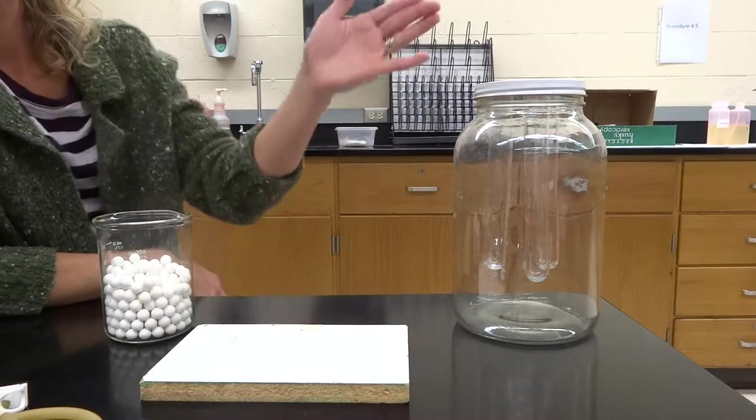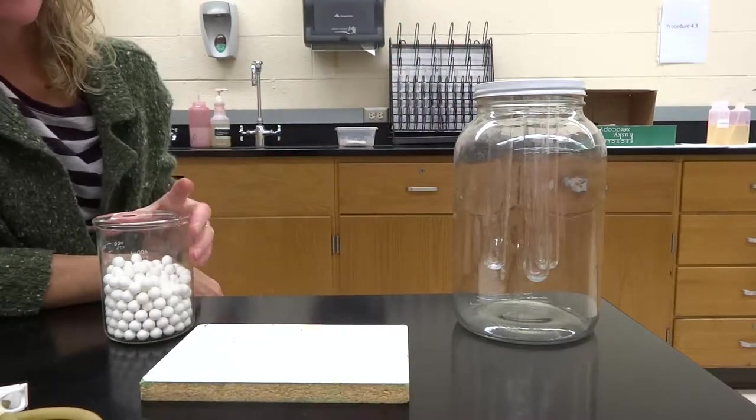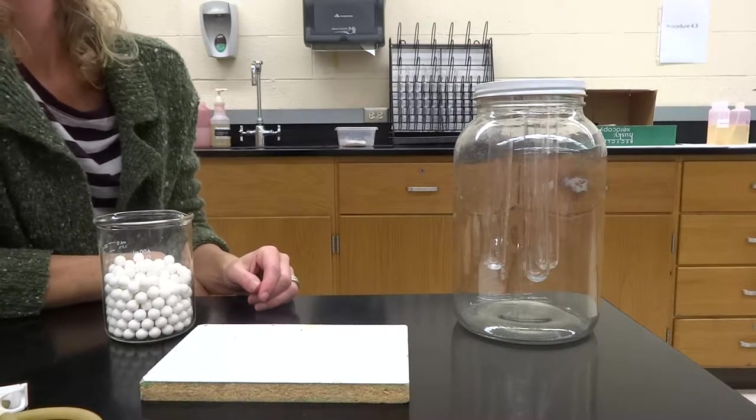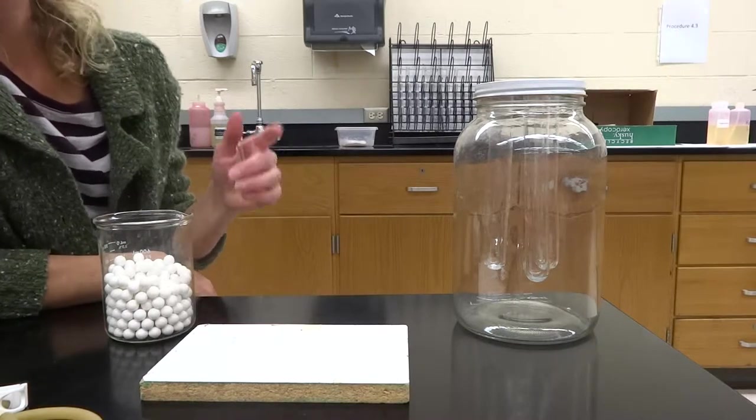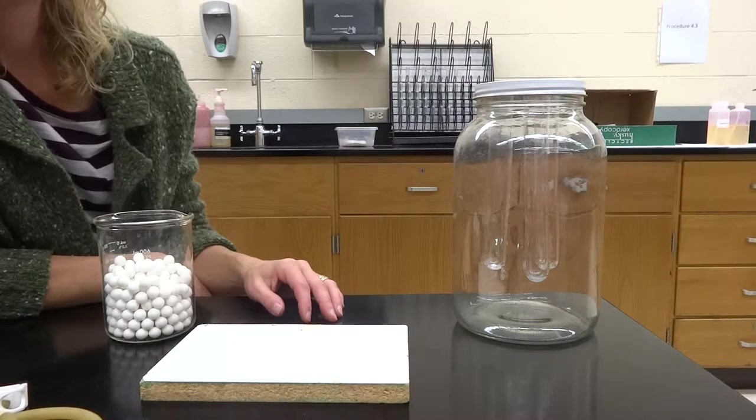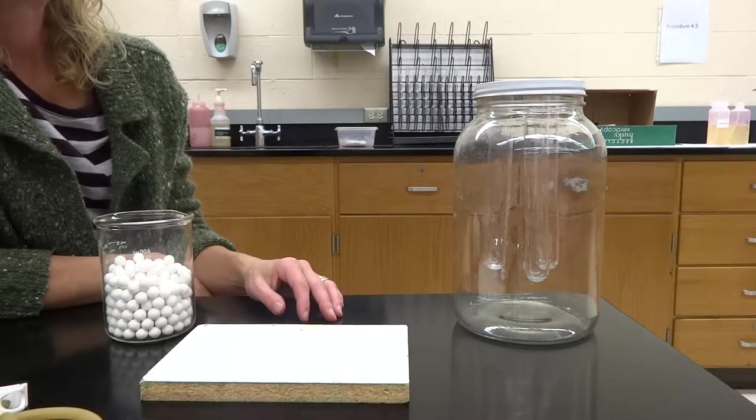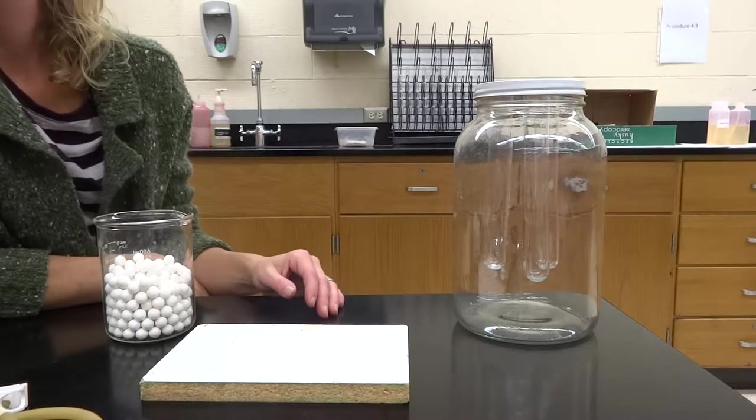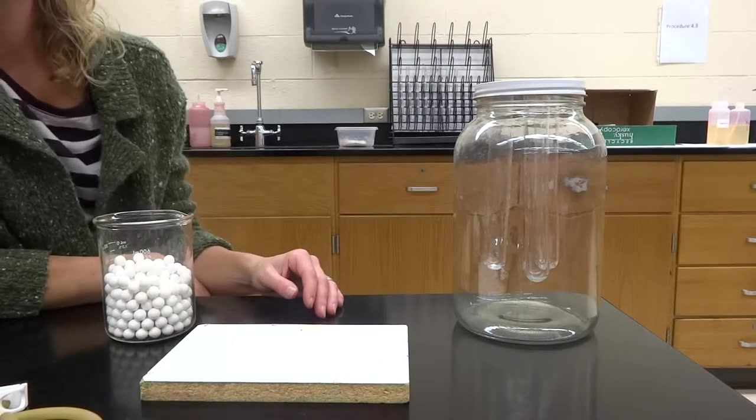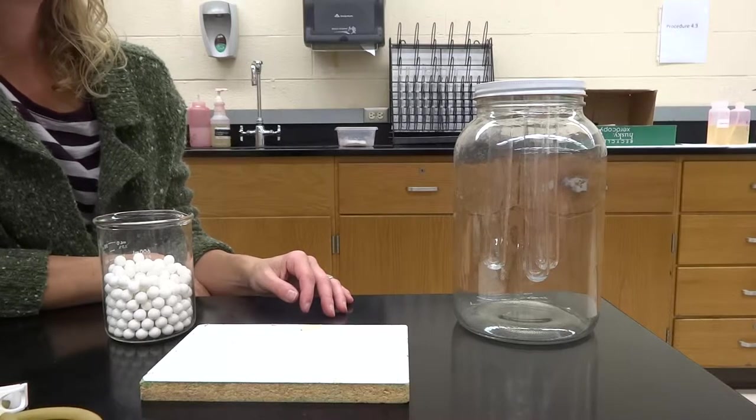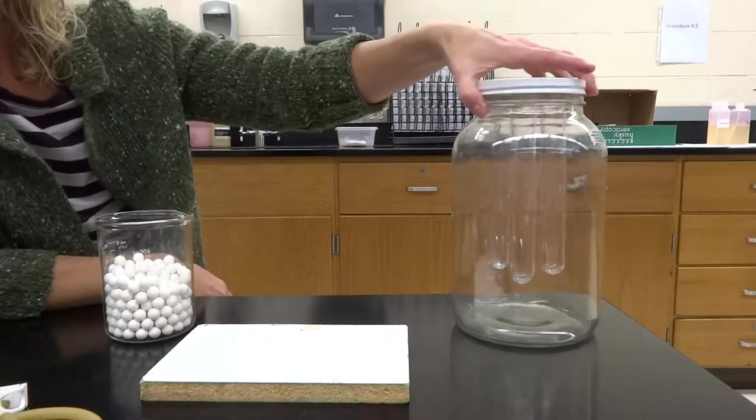We are going to be using a very nice organism called the garden peas. The peas are going to still be alive, they're going to be rooting and kind of growing, and then they are going to be using oxygen and we're going to kind of measure how much oxygen they use.